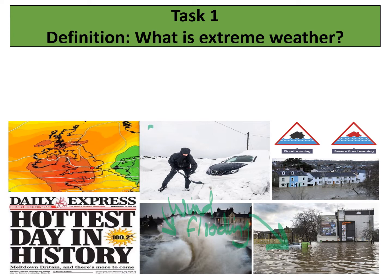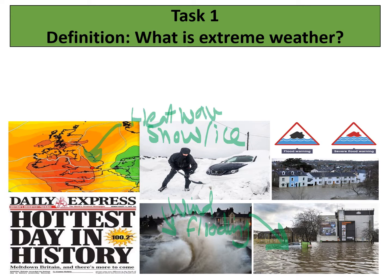We've got lots of ice and snow, which is a massive problem in terms of travel and disruption. This orangey-red coloured choropleth map is showing high temperatures, so we could have heat waves — which is what is being shown in this image about the Daily Express: 'Hottest day in history, Meltdown Britain and there's more to come,' at 102 degrees Fahrenheit. So extreme weather is weather that is different from the average or usual weather pattern.